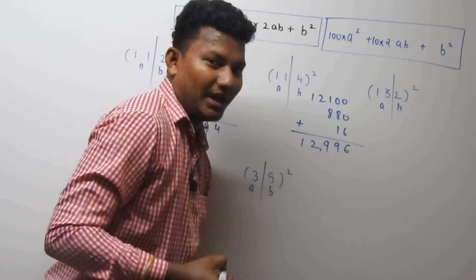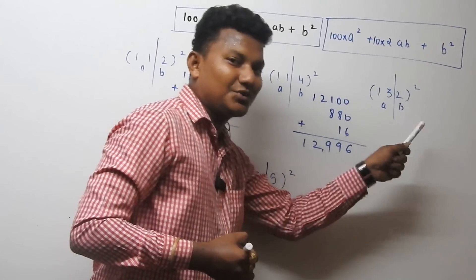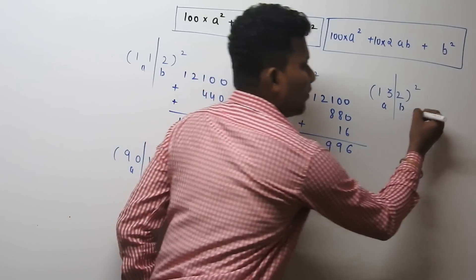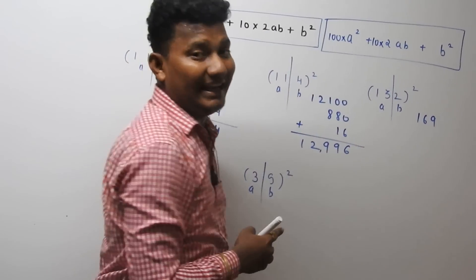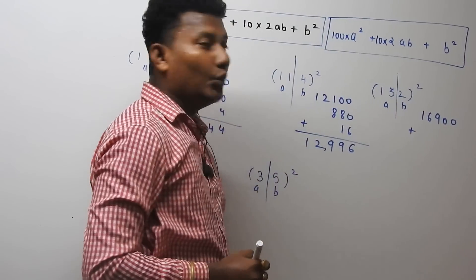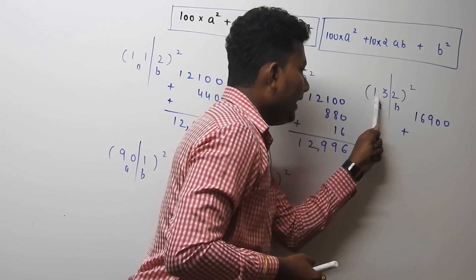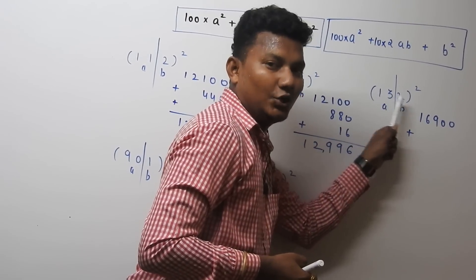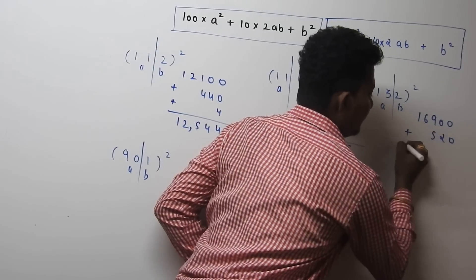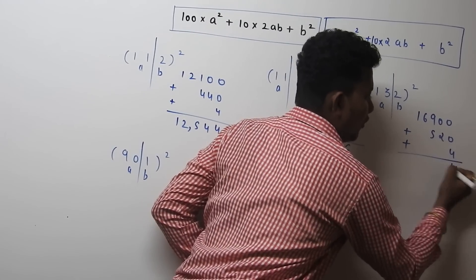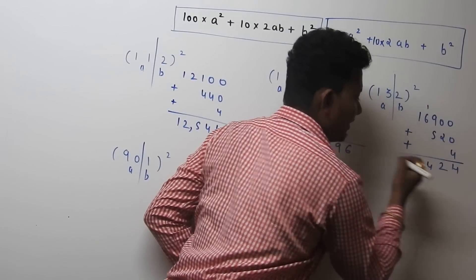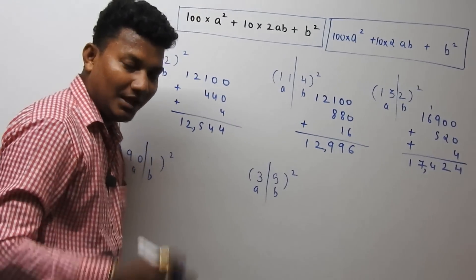Now focus on the next example: 132². The value of a is 13 and b is 2. So 13² = 169, and 169 × 100 = 16900. Then 2ab = 2 × 13 × 2 = 52, and 52 × 10 = 520. And b² = 2² = 4. Adding: 16900 + 520 + 4 = 17424. So the square of 132 is 17424.